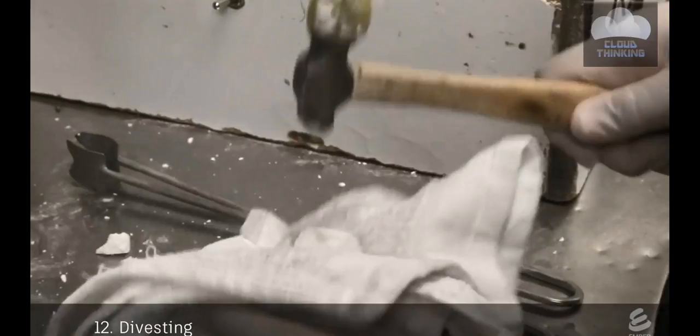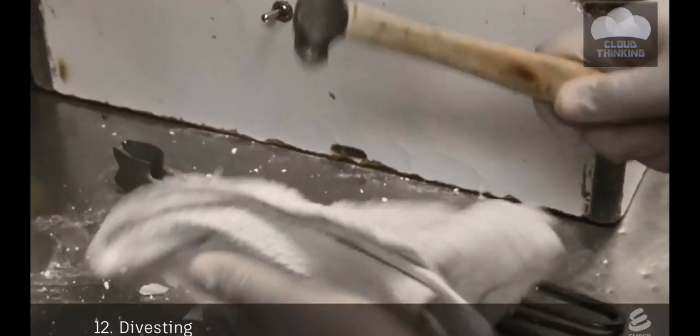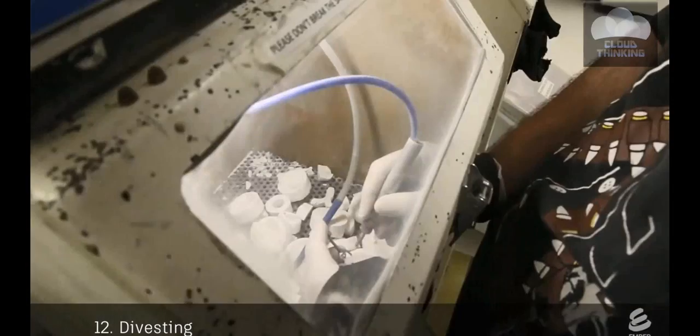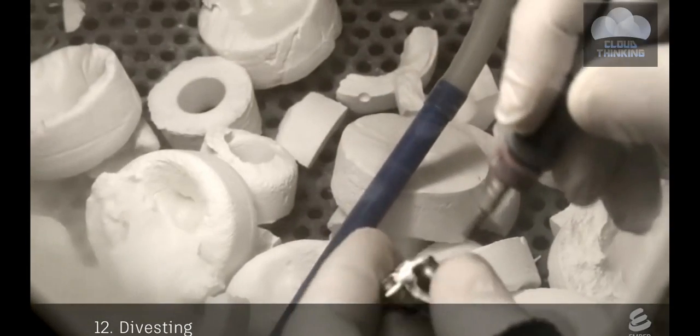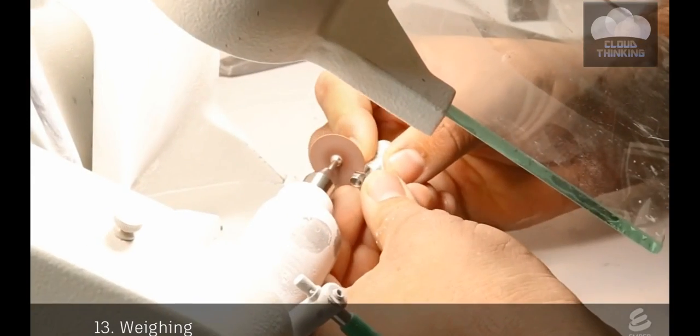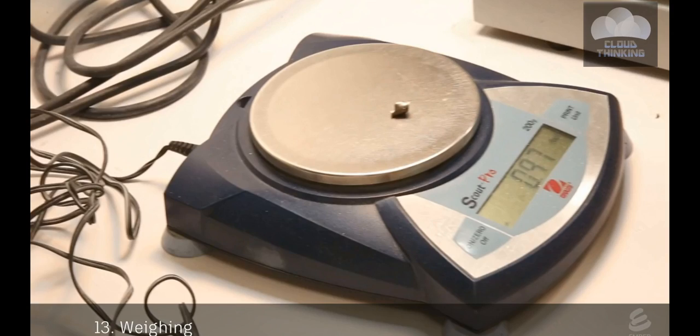In a process called divesting, a technician breaks apart the investment with a hammer and uses an air gun to remove any remaining pieces of investment. He cuts off the sprues and weighs the castings to determine the price.